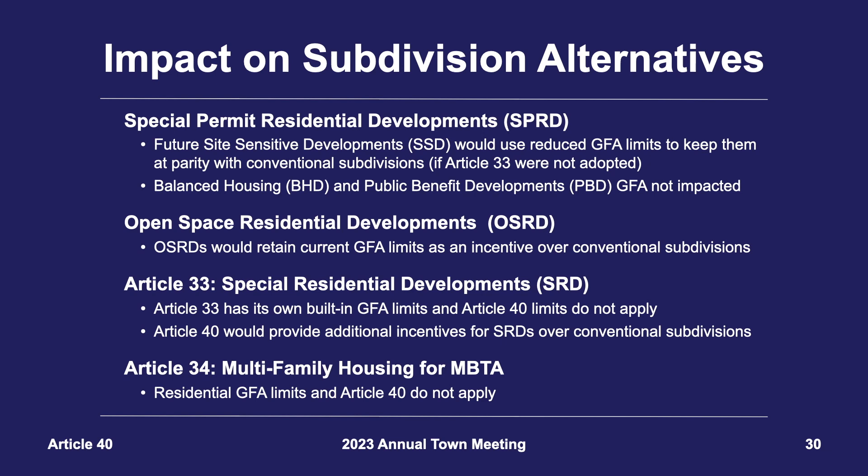How will Article 40 affect Lexington's existing conventional subdivision alternative bylaws? Lexington's existing special permit residential development bylaw has three options, two of which determine their allowable GFA using a formula internal to the bylaw and thus would not be impacted by Article 40. The third option, site-sensitive developments, would fall under the new lower GFA limits, keeping this special permit option at parity with the conventional subdivision. Lexington's recently passed open space residential development bylaw is exempted from the new limits under Article 40, providing an incentive for development teams to choose an OSRD. Article 33, special residential developments, also uses a formula internal to the bylaw and thus the current and proposed GFA limits do not apply.